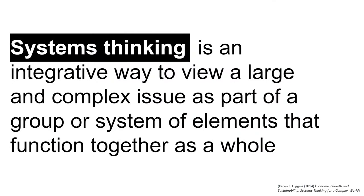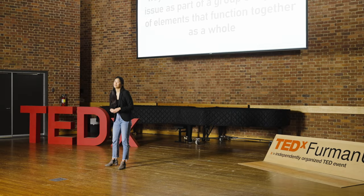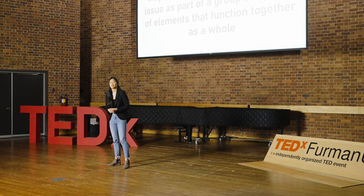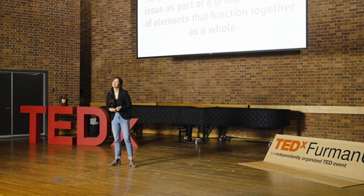What is Systems Thinking? Well, Systems Thinking is an integrative way to view a large and complex issue as part of a group or system of elements together as a whole. Systems thinking requires you to take a step back and look at the big picture. To understand Systems Thinking, you first need to understand Systems.